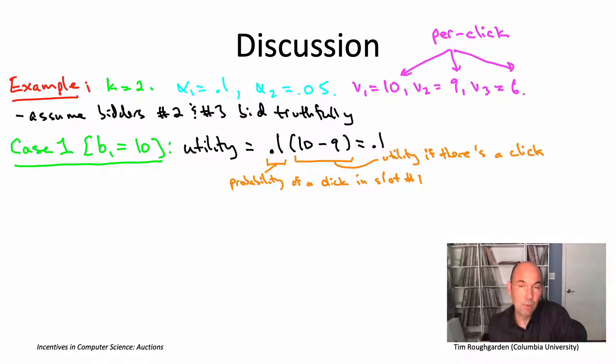That's the utility bidder number one gets if it bids truthfully and winds up in the top slot. Now, if this auction were to be truthful, it would need to be the case that no matter what else bidder number one could bid, it would still wind up with utility 0.1 or less. But let me now show you that there is a bid that bidder one could make that would actually give it higher utility.